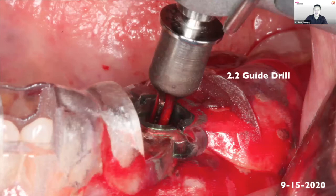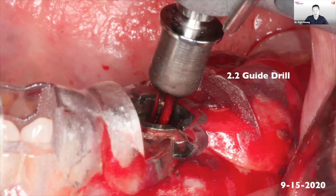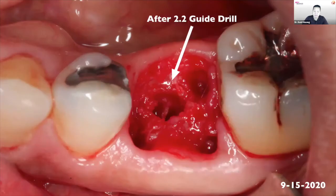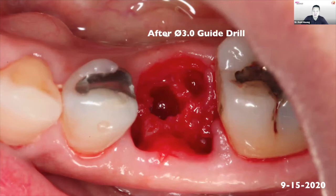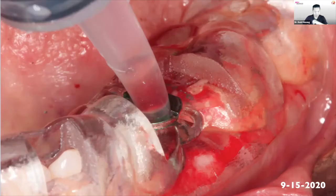Then we go in with the 2.2 guide drill — the initial drill — at a medium speed of 200 to 500 RPM. We don't use the handpiece irrigation because it won't get into the closed surgical site. A photograph shows the osteotomy getting a little bigger after the 2.2 initial drill. Then we use the 3.0 diameter guide drill, and between every drill I irrigate with chilled saline.